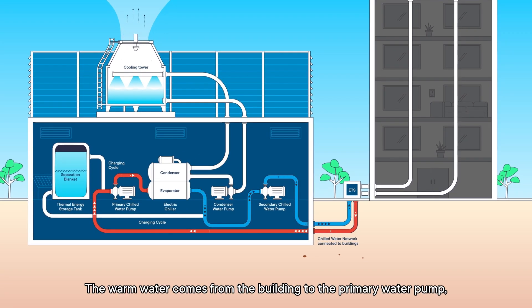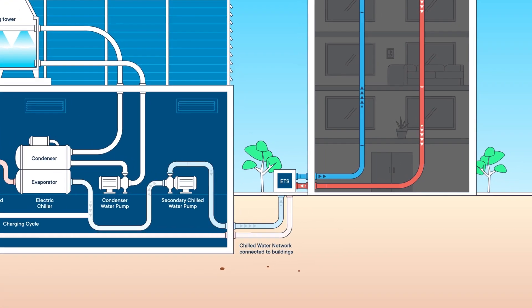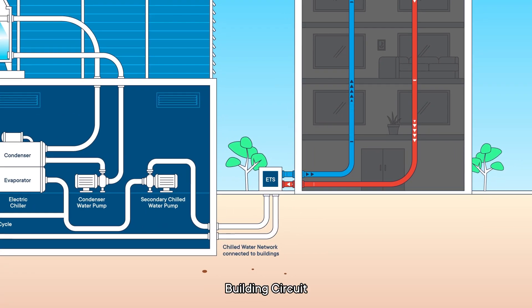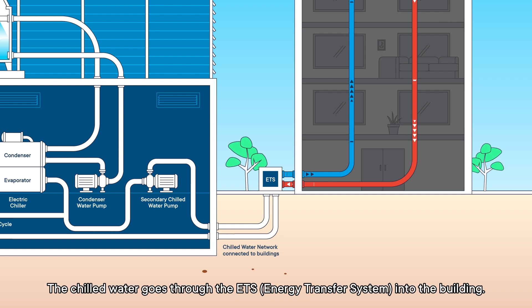Electric chiller circuit: The warm water comes from the building to the primary water pump, goes into the chiller, gets chilled, and then gets supplied through the secondary water pump to the ETS.